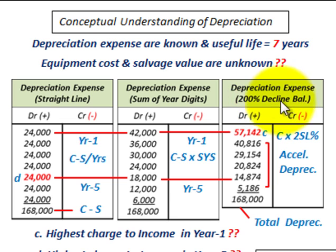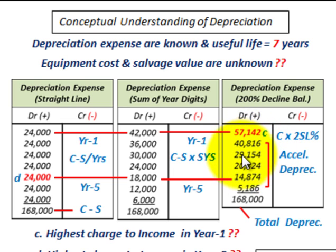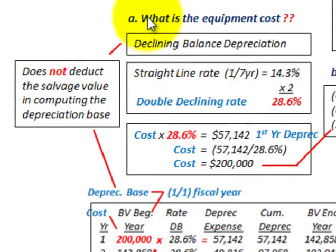With the declining balance method, what's key is that we work with cost — we start out with our cost to determine depreciation, then take two times the straight-line percentage. Over seven years that's 14.3% per year, so two times that gives us 28.6%. Both the declining balance and sum of years digits produce accelerated depreciation — more depreciation earlier in the asset's life — whereas straight line gives a constant depreciation charge.